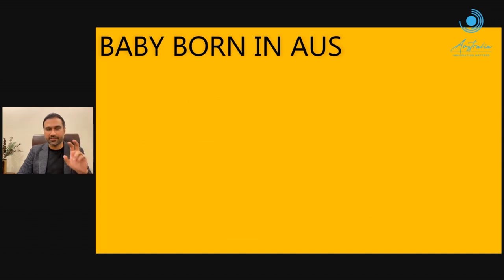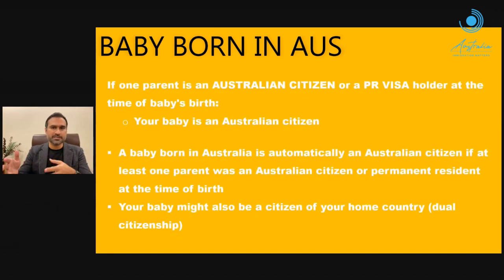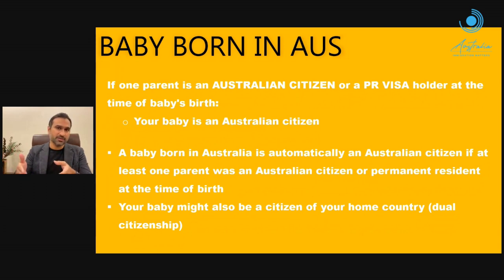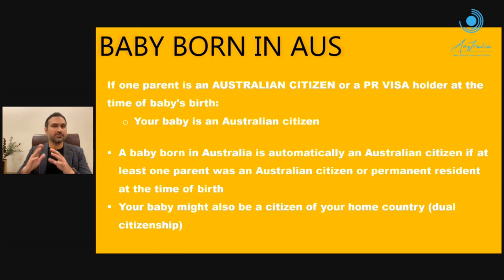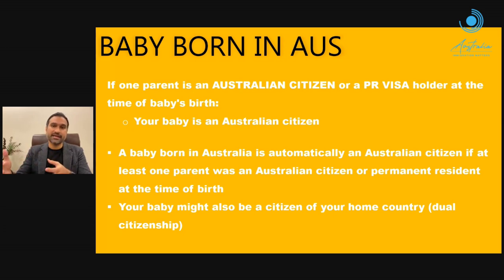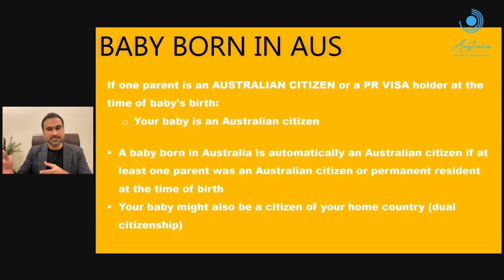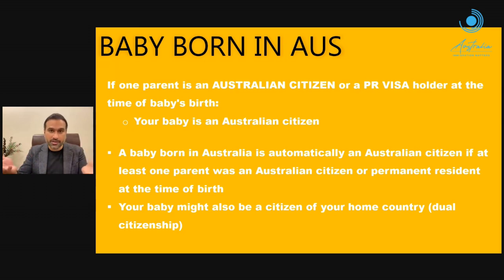Now let's take up the cases in the second category: if the baby is born in Australia. If one parent is an Australian citizen or permanent residency visa holder at the time of the baby's birth and the baby is born in Australia, then your baby is automatically an Australian citizen. A baby born in Australia is automatically an Australian citizen if at least one parent was a citizen or permanent resident at the time of birth. Your baby may also be a citizen of your home country in the case of dual citizenship allowance.